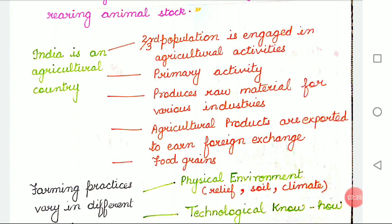Farming practices vary in different regions. The reasons behind this are: physical environment, which includes relief, soil and climate; technological know-how; and sociocultural practices. Physical environment, or the physical factors which include climate, soil and relief, influences agriculture.